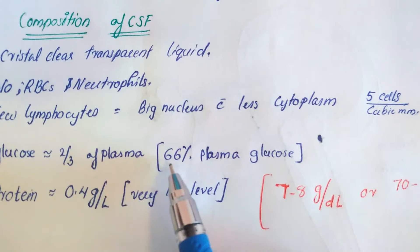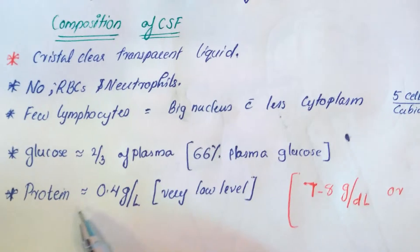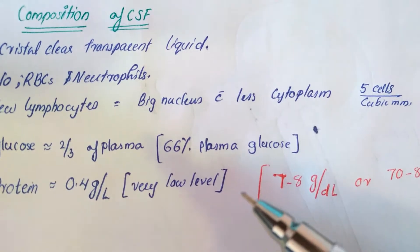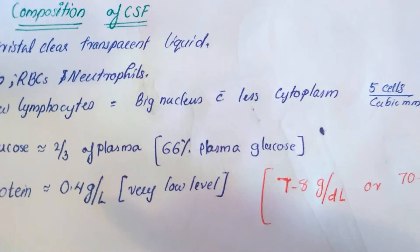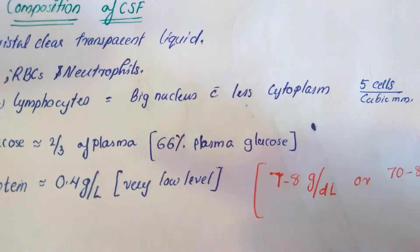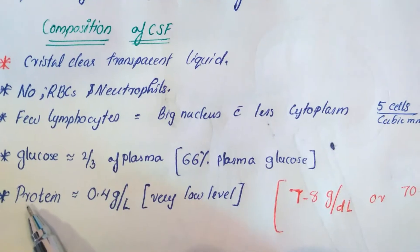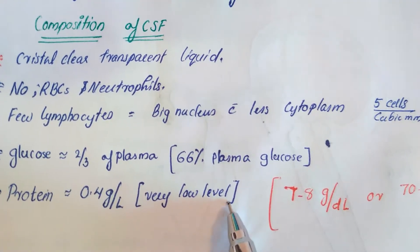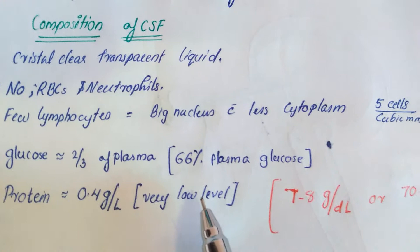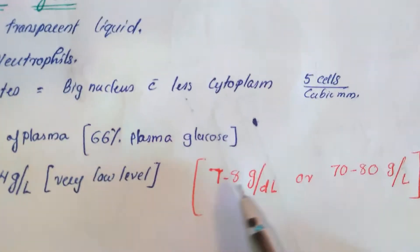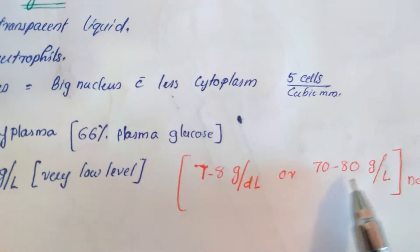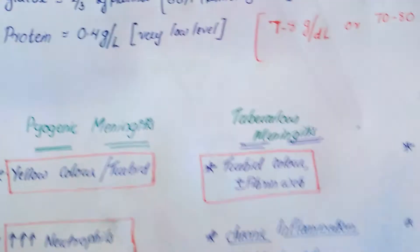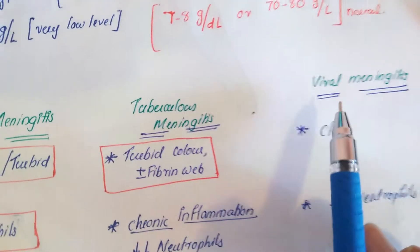The normal lymphocyte count is approximately five cells per cubic millimeter. The level of glucose is approximately two-thirds of plasma, which means 66% of plasma glucose. The glucose transporter is not very effective, so not all plasma glucose enters the CSF. The protein level is 0.4 gram per liter — very low compared to the normal plasma level of 70 to 80 gram per liter.